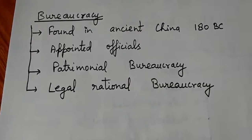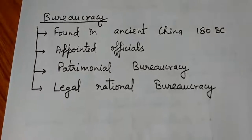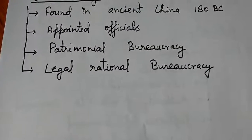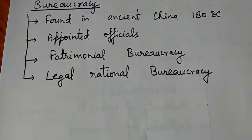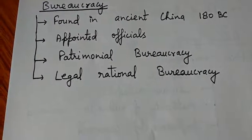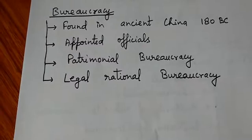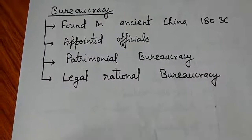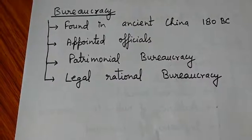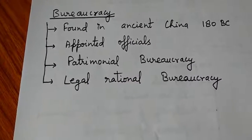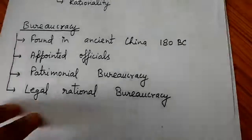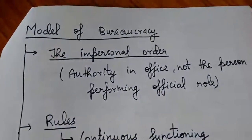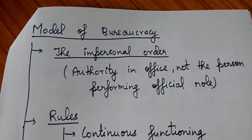There are two types: patrimonial bureaucracy and legal-rational bureaucracy. Patrimonial bureaucracy is seen in traditional authority — kings appointed officials directly. Legal-rational bureaucracy is the modern concept, where posts are filled through competitive examinations like IES and IPS, given on a rational basis — merit — among those who compete.